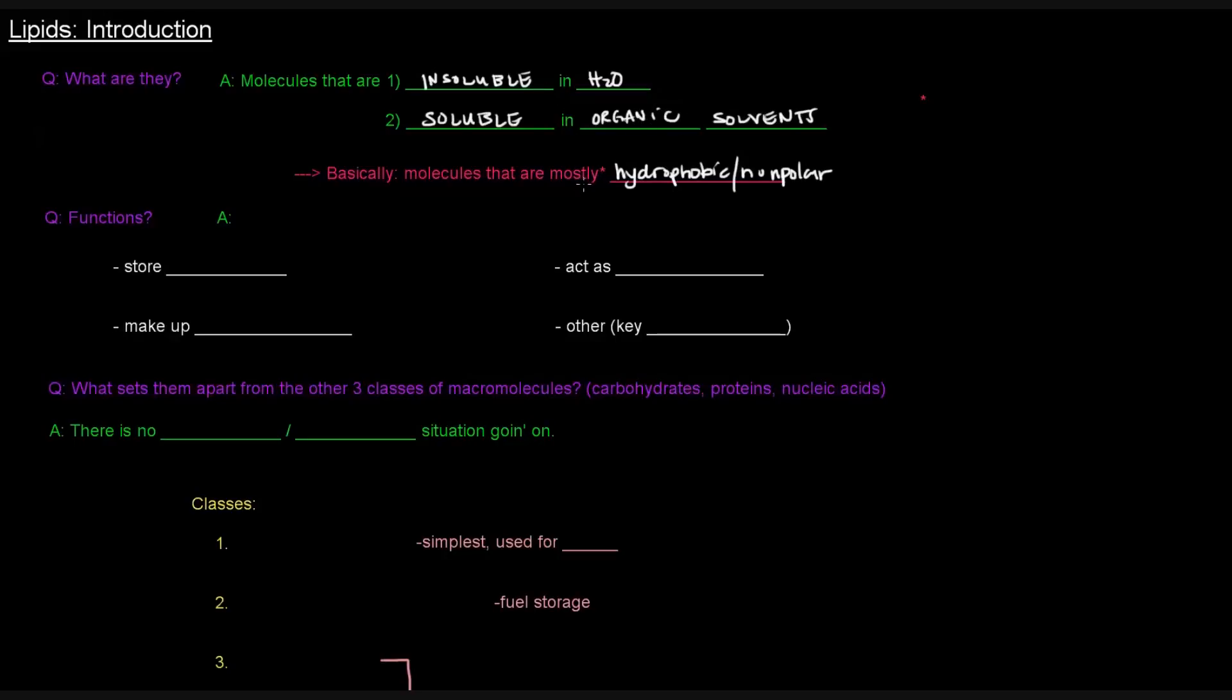Now, you'll notice the word mostly here has an asterisk, and the reason why is that these molecules don't have to be entirely hydrophobic or entirely nonpolar. They can be amphipathic or amphiphilic. What that is basically saying, those terms are defined by the idea that a molecule can contain both polar and nonpolar portions, or hydrophilic and hydrophobic portions. So, that's what these terms refer to.